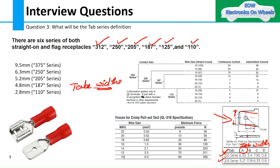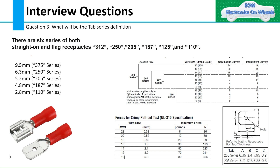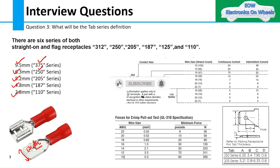A question comes to mind: when the tab width is 6.35 mm, why is it called the 250 series, and how is that number derived? We will see that. The tab widths are: 9.5 mm, 6.3 mm, 5.2 mm, 4.8 mm, and 2.8 mm — these are the widths of the terminal.